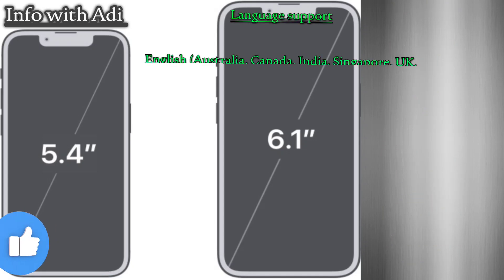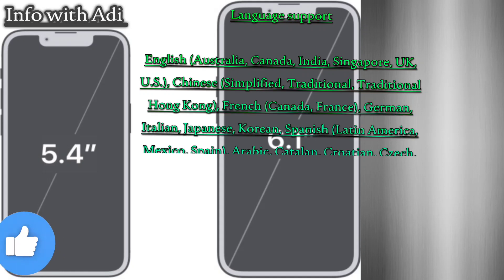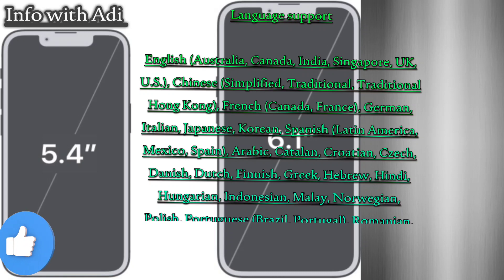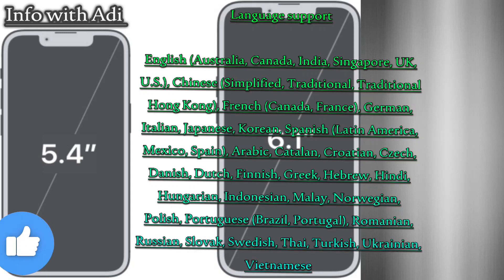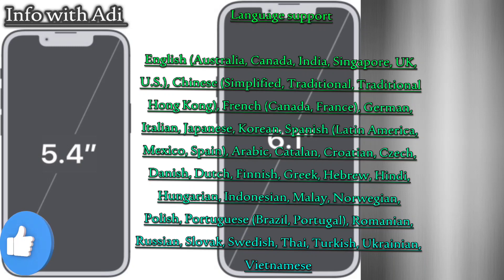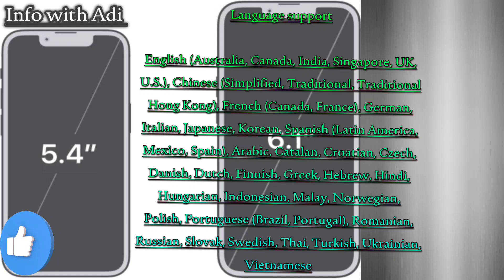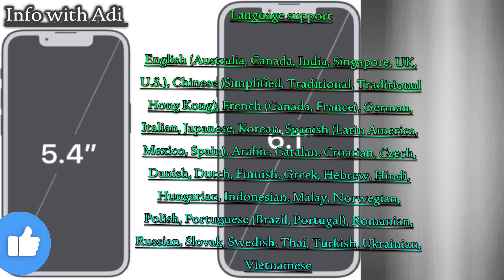Language support includes: English (Australia, Canada, India, Singapore, UK, US), Chinese (Simplified, Traditional, Traditional Hong Kong), French (Canada, France), German, Italian, Japanese, Korean, Spanish (Latin America, Mexico, Spain), Arabic, Catalan, Croatian, Czech, Danish, Dutch, Finnish, Greek, Hebrew, Hindi, Hungarian, Indonesian, Malay, Norwegian, Polish, Portuguese (Brazil, Portugal), Romanian, Russian, Slovak, Swedish, Thai, Turkish, Ukrainian, and Vietnamese.